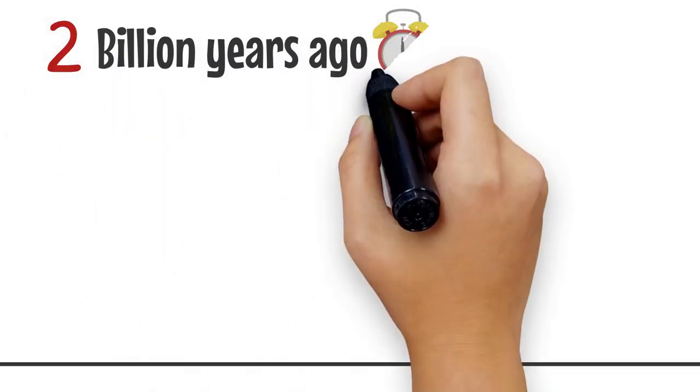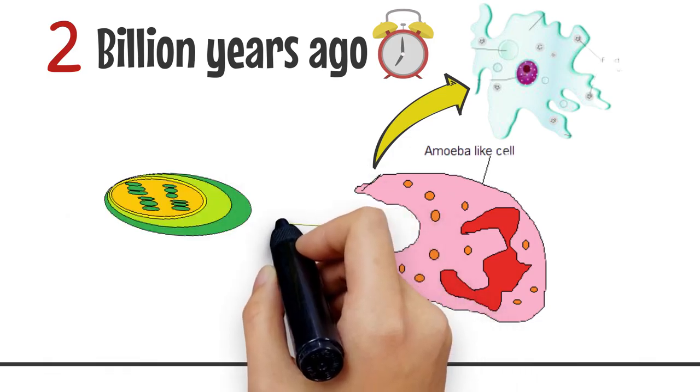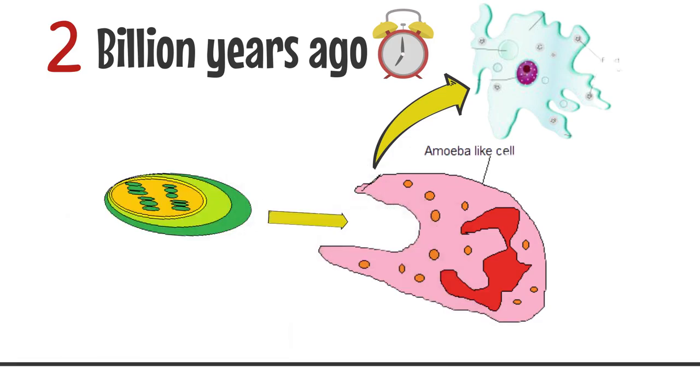About 2 billion years ago, a large amoeba-like cell phagocytized a cyanobacterium, ingesting it as a food source.